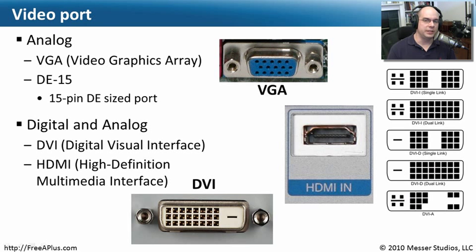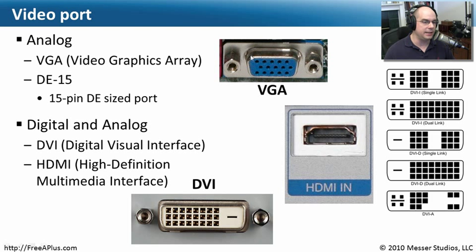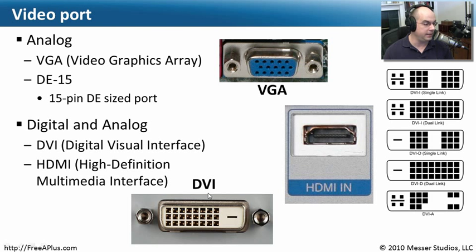For video ports, the most common analog port is VGA, which uses a DE-15 connector — 'DE' referring to the shell size and '15' referring to the number of pins. For digital connections, we use DVI (Digital Visual Interface) or HDMI (High Definition Multimedia Interface).